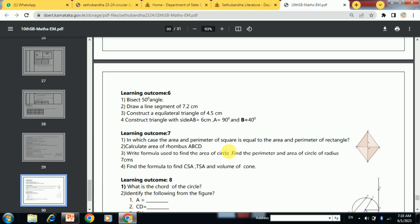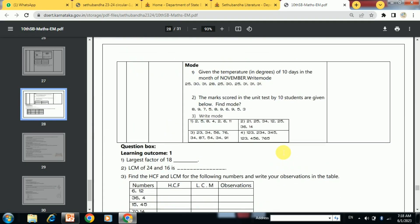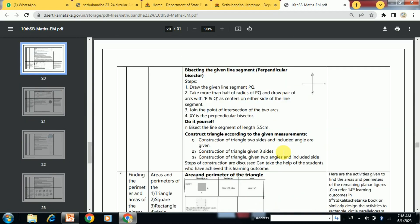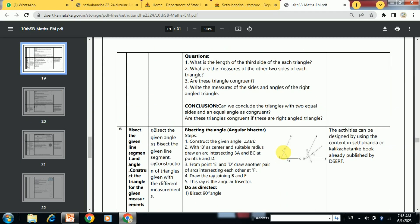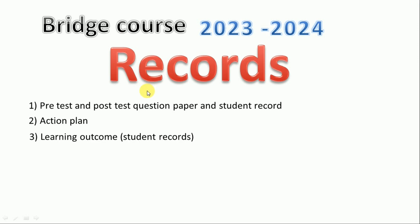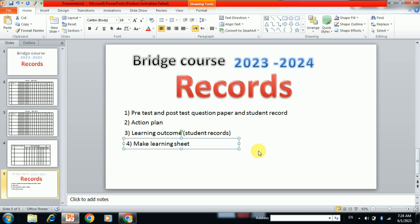One more important thing is we have to make an action plan — a small action plan for 15 days — taking help of the activities from the bridge course study material. So the records we have to maintain for bridge course are: first, pre-test and post-test question papers; second, student records; third, an action plan; and fourth, maintain individual learning outcome records of students.